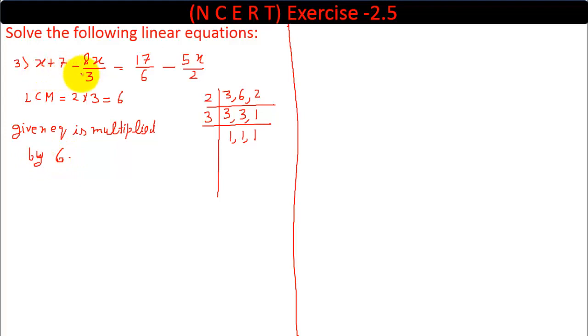Now in each particular term we multiply 6. This is 6 multiplied by x plus 7, minus 6 multiplied by 8x upon 3, equals 6 multiplied by 17 upon 6 minus 6 multiplied by 5x upon 2. 6 multiplied by x gives 6x plus 7 times 6 is 42. Minus 3s cancel, 3 times 2 is 6, 8 times 2 is 16, so 16x equals 6 divided by 6 gives 17. 2 times 3 is 6, 3 times 5 is 15, minus 15x.